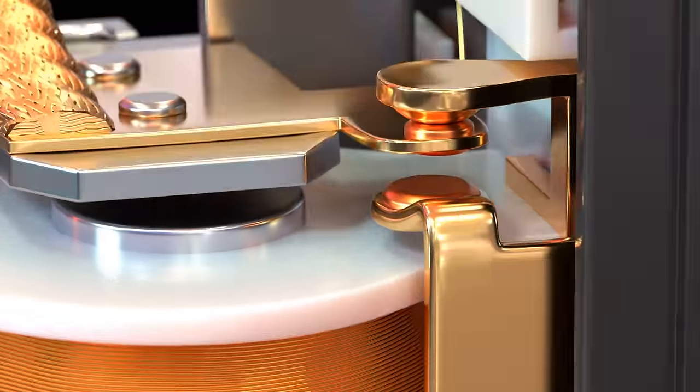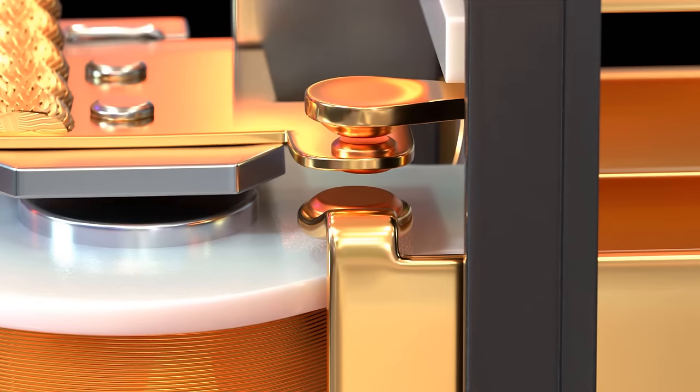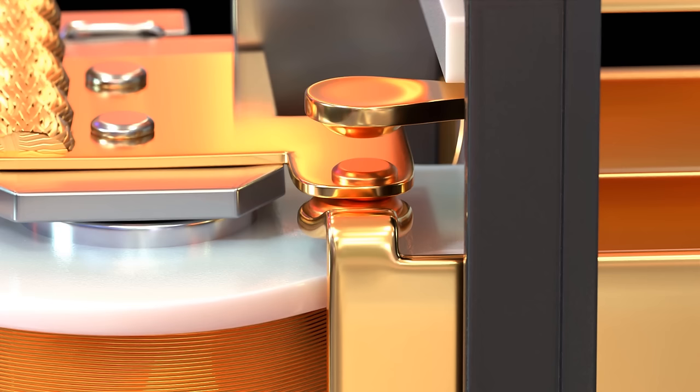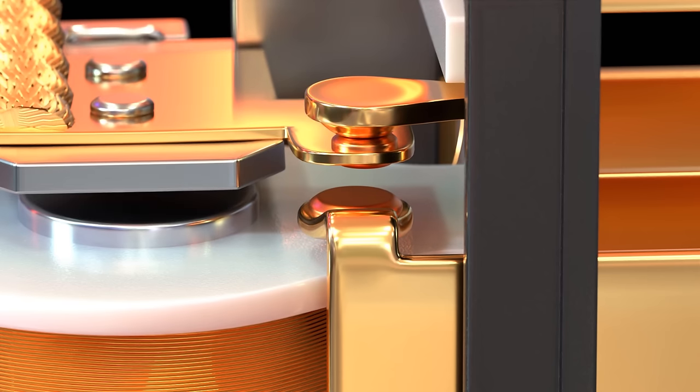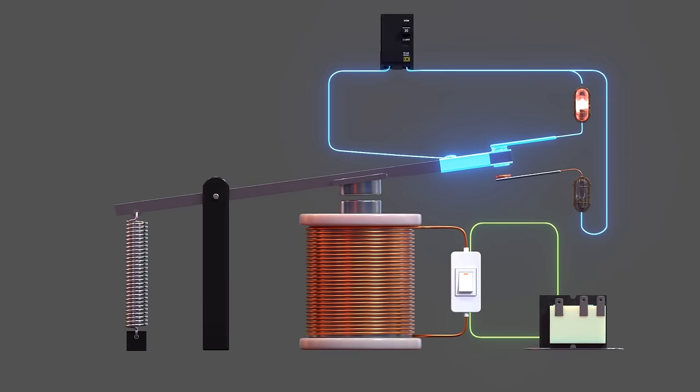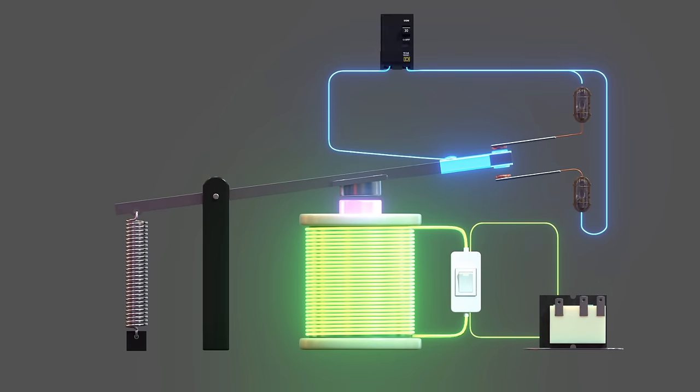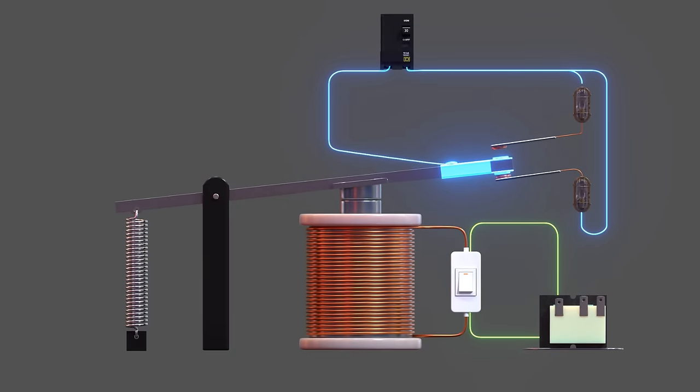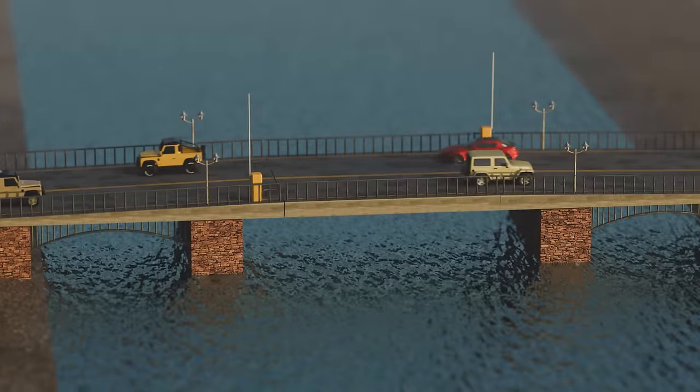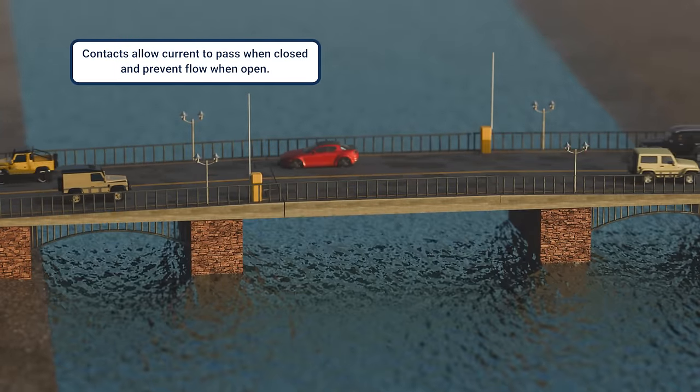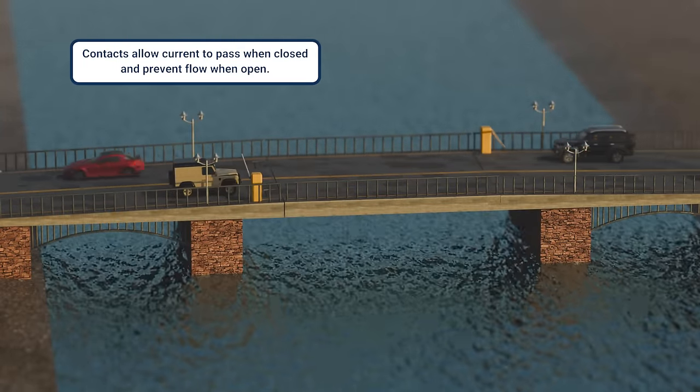These contacts are often referred to as switches or contact points. They are the primary conductive part that either disrupts or allows the flow of electricity. They act like little drawbridges, allowing current to pass when closed and preventing flow when open.